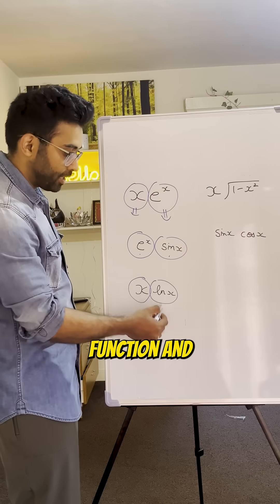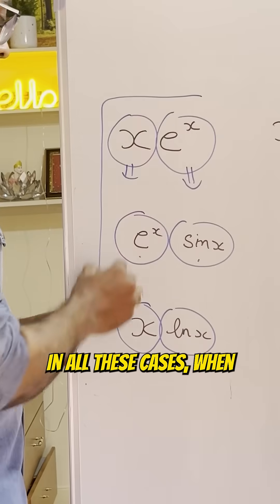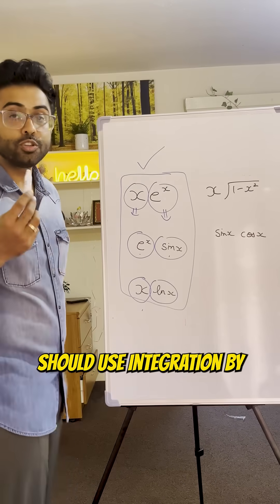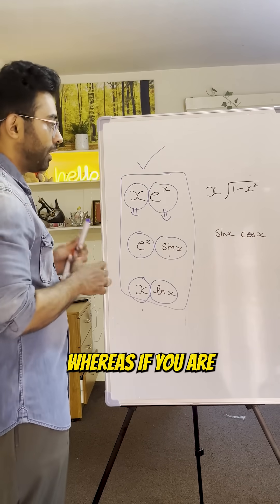Here one is an algebraic function and the other is a logarithmic function. In all these cases when you're integrating two different kinds of functions, you should use integration by parts.